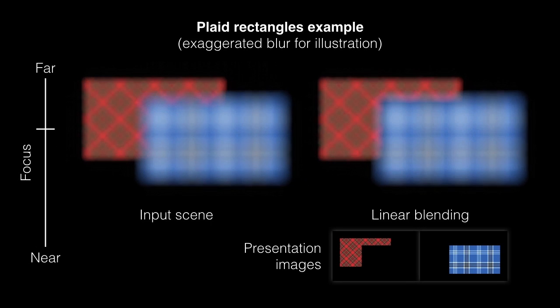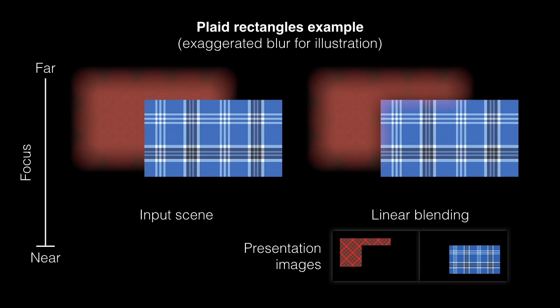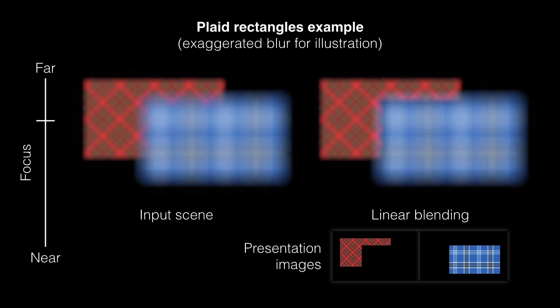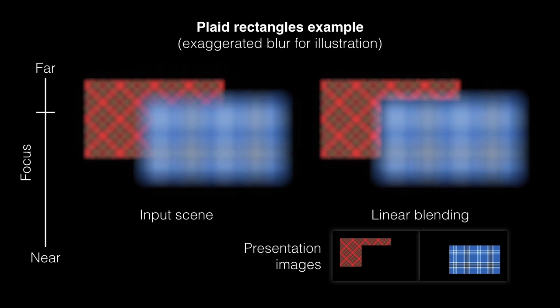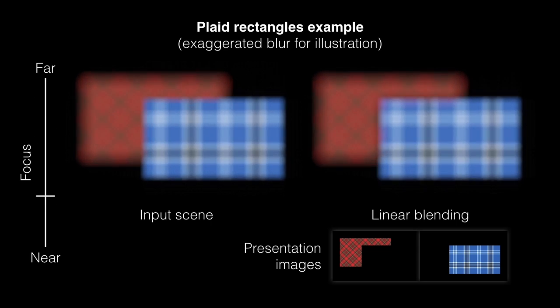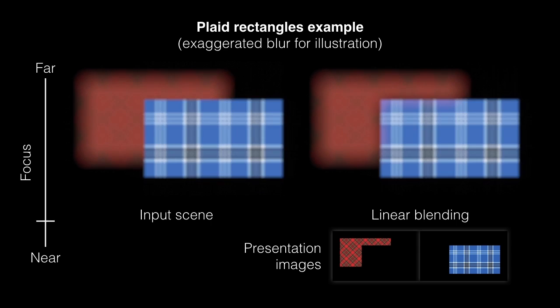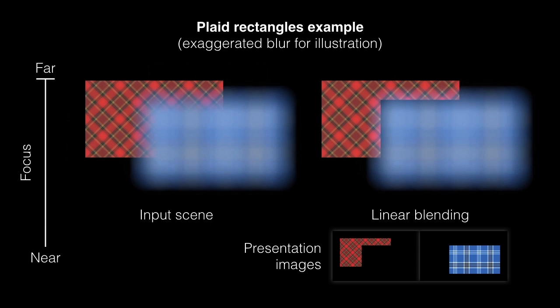Existing techniques blend each pixel to the two nearest planes by linear interpolation, but this results in very noticeable artifacts near occlusion boundaries. Some edges are incorrectly sharp, some are incorrectly darkened, and halos become visible.